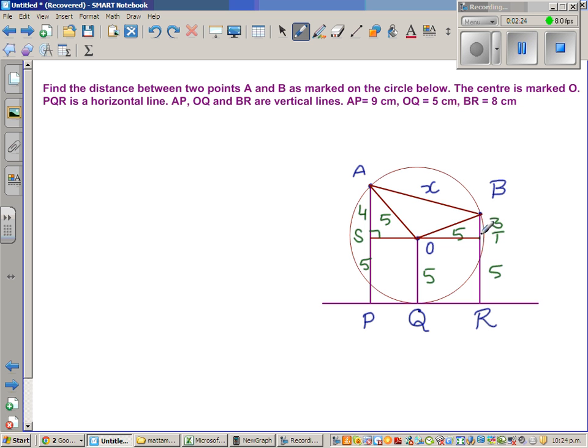So this is a right angle triangle, this is also a right angle triangle. This is a right angle triangle where the hypotenuse is 5. This is also a right angle triangle where the hypotenuse is 5.